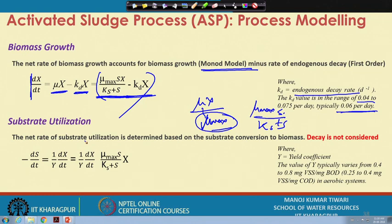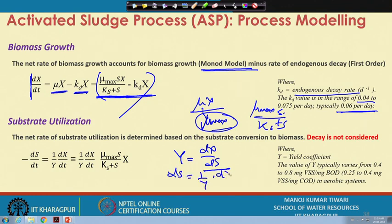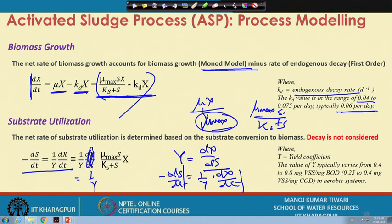For substrate utilization, recall the concept of biomass yield: how much biomass is produced per unit substrate consumed. So dS = (1/Y)·dX, and dividing both sides by dt gives dS/dt = (1/Y)·dX/dt.